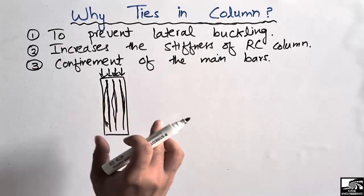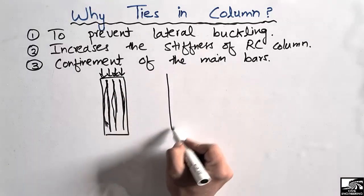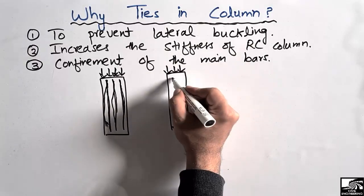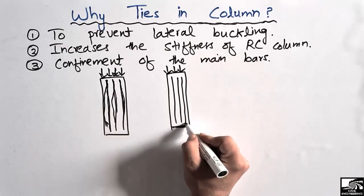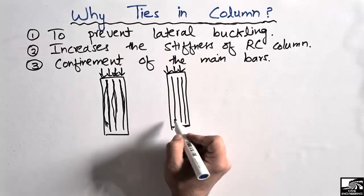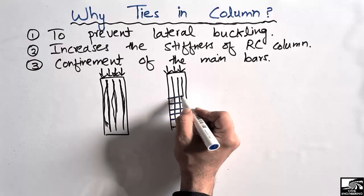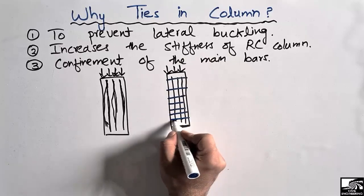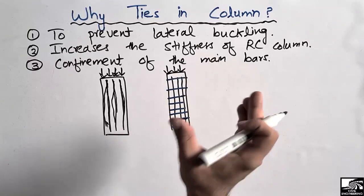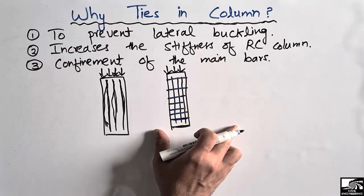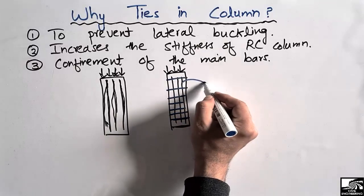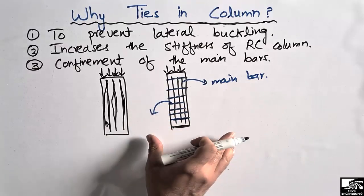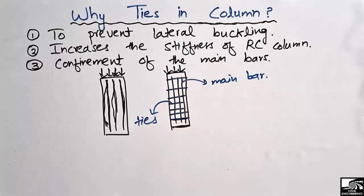With the same column and loading, when we use lateral ties or transverse reinforcement, they confine the main bars so the longitudinal bars will not move from their original position. The ties hold the main bars in place — this is confinement of the main bars. That is the third reason to provide lateral ties in a column.